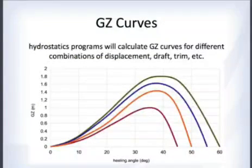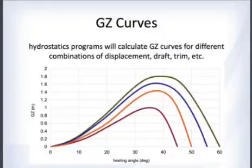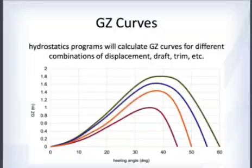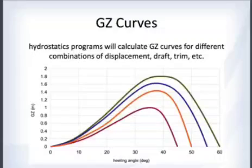Hydrostatics programs calculate GZ curves for all combinations of displacement, draft, trim, and so on — this is a major computation, but computers handle it efficiently. You can plot all the GZ curves to understand how the ship will behave under different loading conditions.